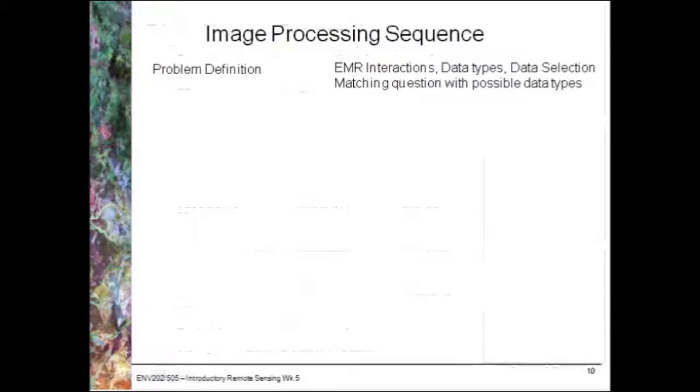Let's have a look at the image processing sequence. The first step is to define your problem. This includes analysing the electromagnetic radiation interactions with your features of interest, looking at different data types, selecting data, and most importantly, matching the question you need to answer with possible data types.